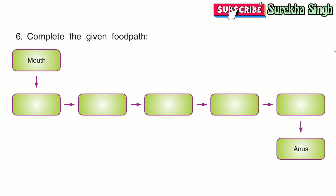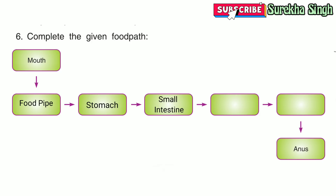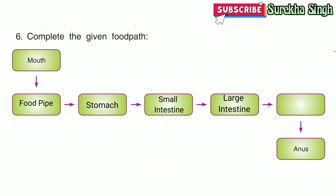Question 6: Complete the given flow path. Digestion of food begins when we put food in our mouth. From the mouth, food goes into the food pipe and enters the stomach, where it is partially digested. From the stomach, food passes into the small intestine, where the walls absorb digested food. Undigested food passes into the large intestine, where the walls absorb water. Then the undigested semi-solid waste is collected in the rectum and eliminated through the anus.